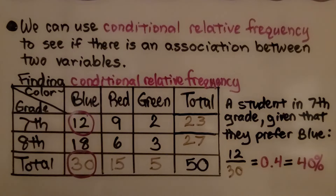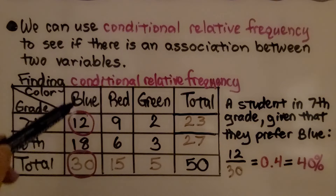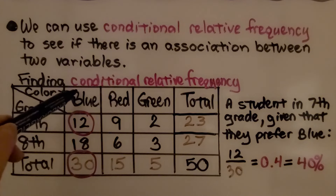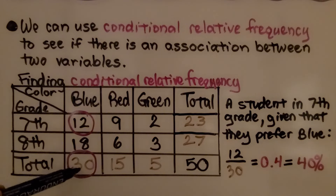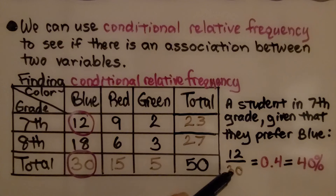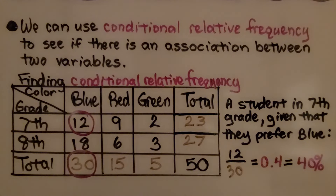If you remember from the previous video, for finding conditional relative frequency — if a student is in seventh grade given that they prefer blue for a color, we would do 12 over the total 30. We have 12 thirtieths, which equals four tenths or 40 hundredths, which is 40%. That is the conditional relative frequency of a student in seventh grade given that they prefer blue.